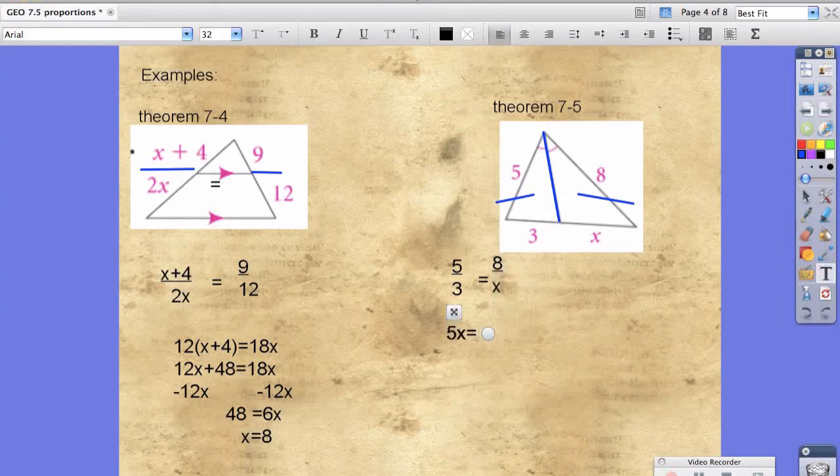We get 5x equals 24, x equals 24 fifths.